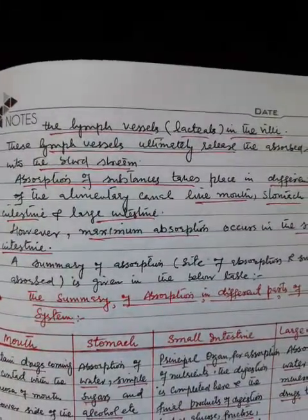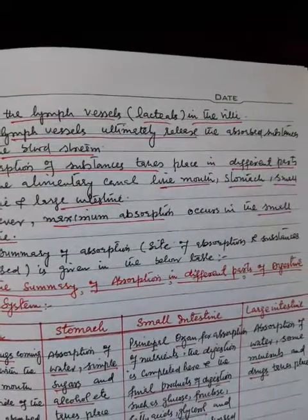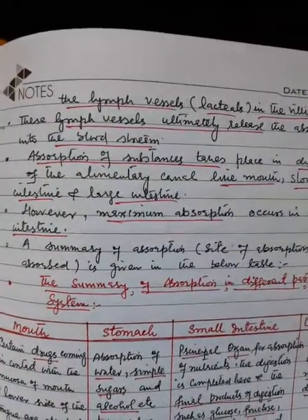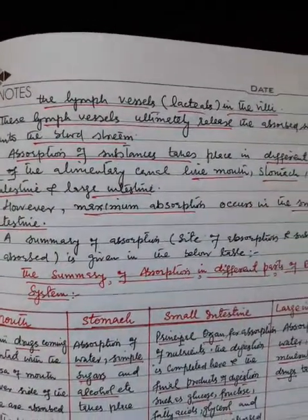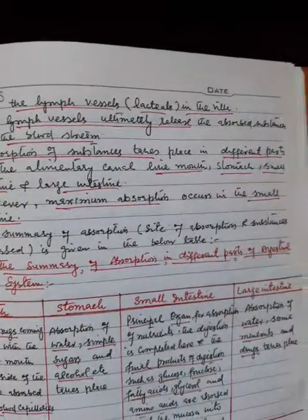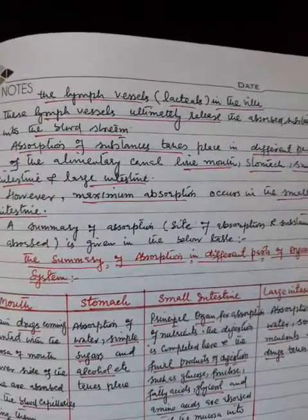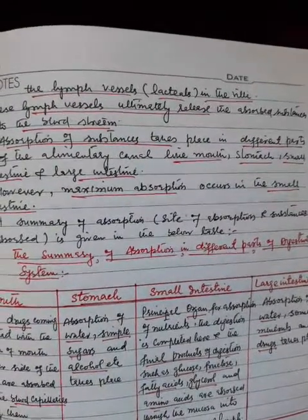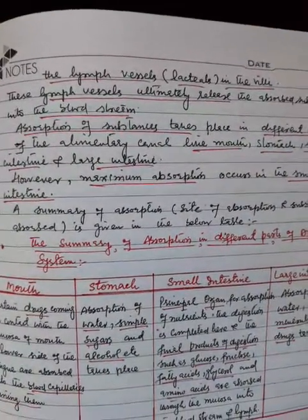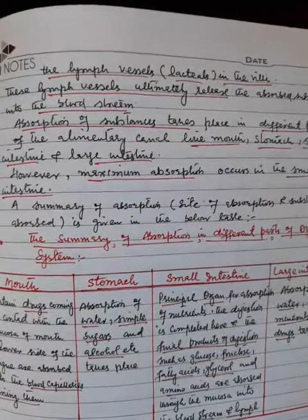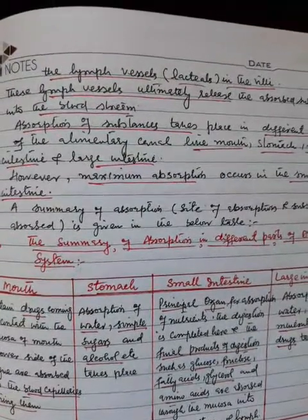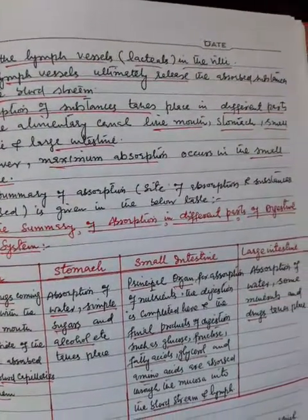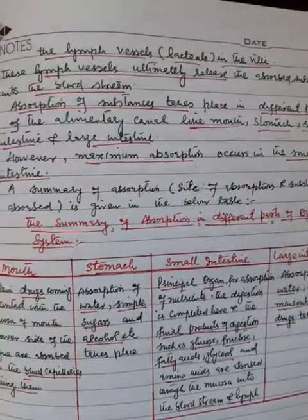The chylomicrons are transported into the lymph vessels called lacteals in the villi. The lymph vessels ultimately release the absorbed substances into the bloodstream. Absorption of substances takes place in different parts of the alimentary canal — mouth, stomach, small intestine, and large intestine — however, maximum absorption occurs in the small intestine.